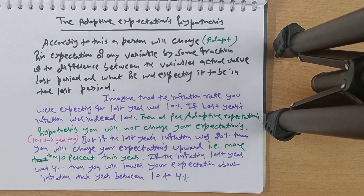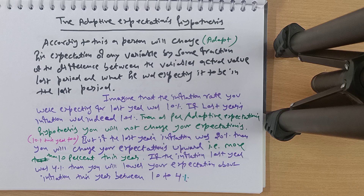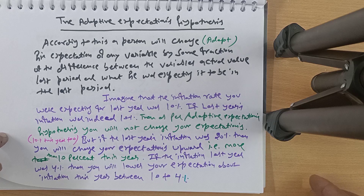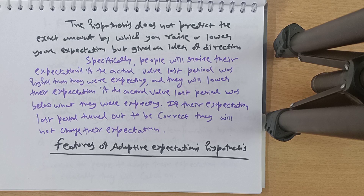If last year's inflation was 10% and this year's is also 10%, you keep your expectation steady. But if last year's inflation was 20%, you will revise your expectation upward — expecting more than 10% this year. Similarly, if inflation was 4% last year, you will lower your expectation downward toward 4%. The hypothesis doesn't predict the exact amount by which you raise or lower expectations, but it gives a direction.